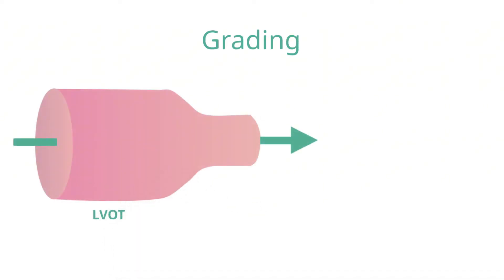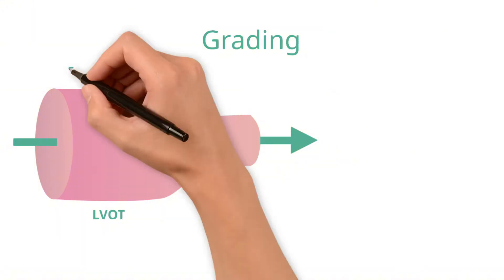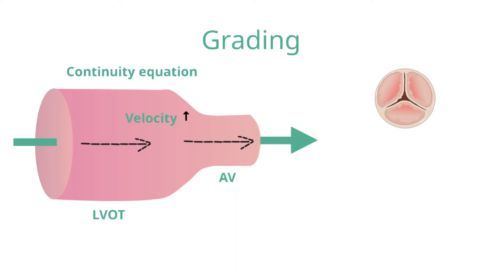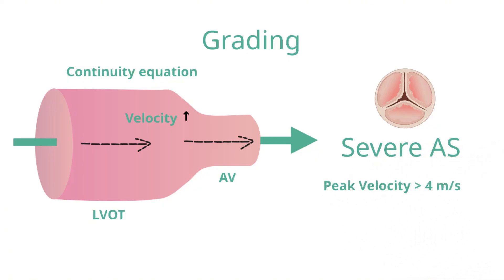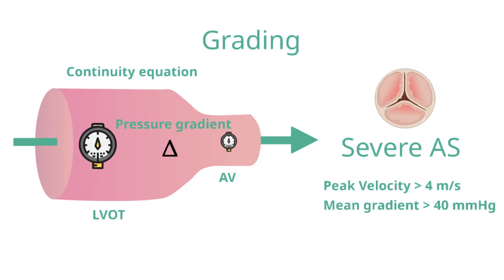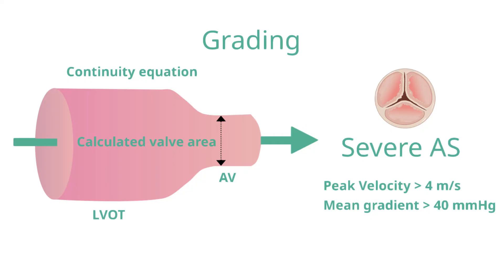The haemodynamics of aortic stenosis can be explained by the continuity equation: since flow must be conserved in a closed system, blood moving from a larger space to a smaller one must accelerate, like a river speeding up through a restriction. Using Doppler, we can measure the peak velocity of blood moving through the aortic valve; a peak velocity of greater than 4 m/s is one criterion for severe AS. The pressure before the aortic valve will be higher than after it, creating a pressure gradient; a mean gradient of greater than 40 mmHg is considered severe. Finally, we can calculate the aortic valve orifice area — a valve area of less than 1 cm² is indicative of severe aortic stenosis.